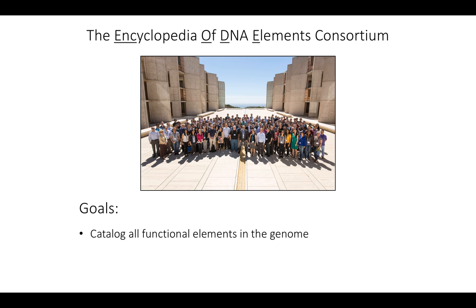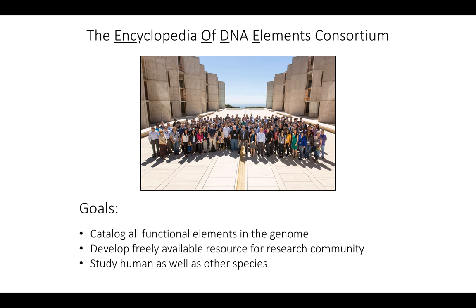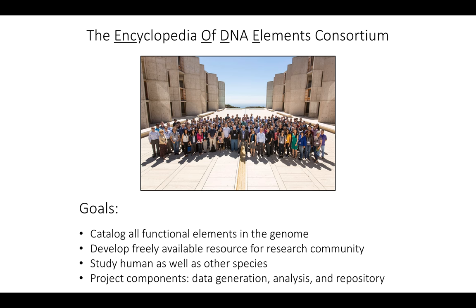So what do we do? We have a few goals. The first is we aim to catalog all functional elements in the human and mouse genomes. We also want to develop freely available resources for the research community and study human as well as mouse and other model organisms — ENCODE used to include worm and fly in the past. At the end, we want to produce components through data generation, data analysis, and a repository so that our results benefit the broader research community.